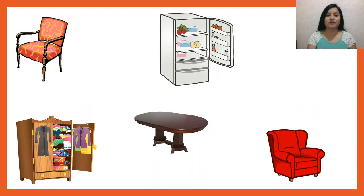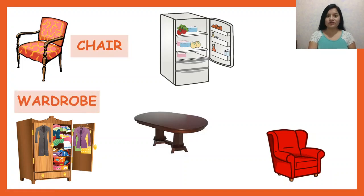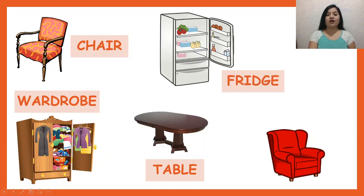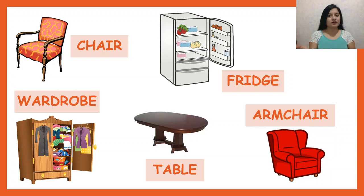Five more objects. Let's start with this. What's this? Chair. What about this one? Wardrobe. Then we have a table. What about this? Fridge. And finally, armchair. Please remember that it's different — a sofa and an armchair.